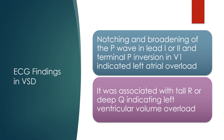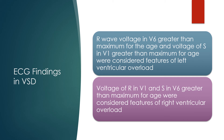Left atrial overload was associated with tall R or deep Q waves, indicating left ventricular volume overload. R wave voltage in V6 greater than maximum for age, and S wave voltage in V1 greater than maximum for age, were considered features of left ventricular overload. Voltage of R in V1 and S in V6 greater than maximum for age were considered features of right ventricular overload.